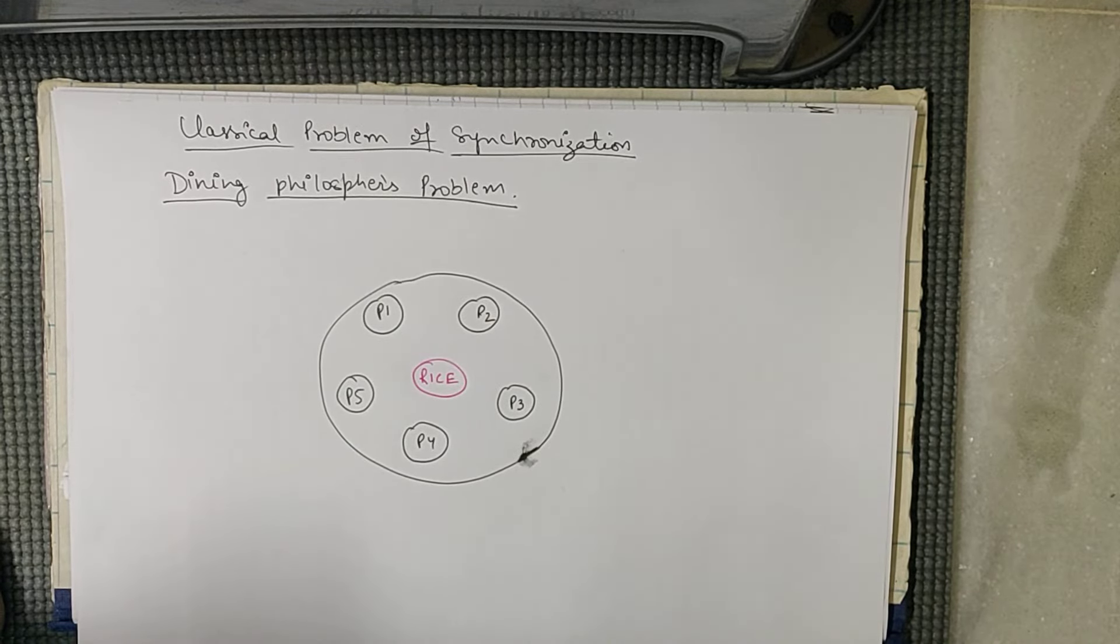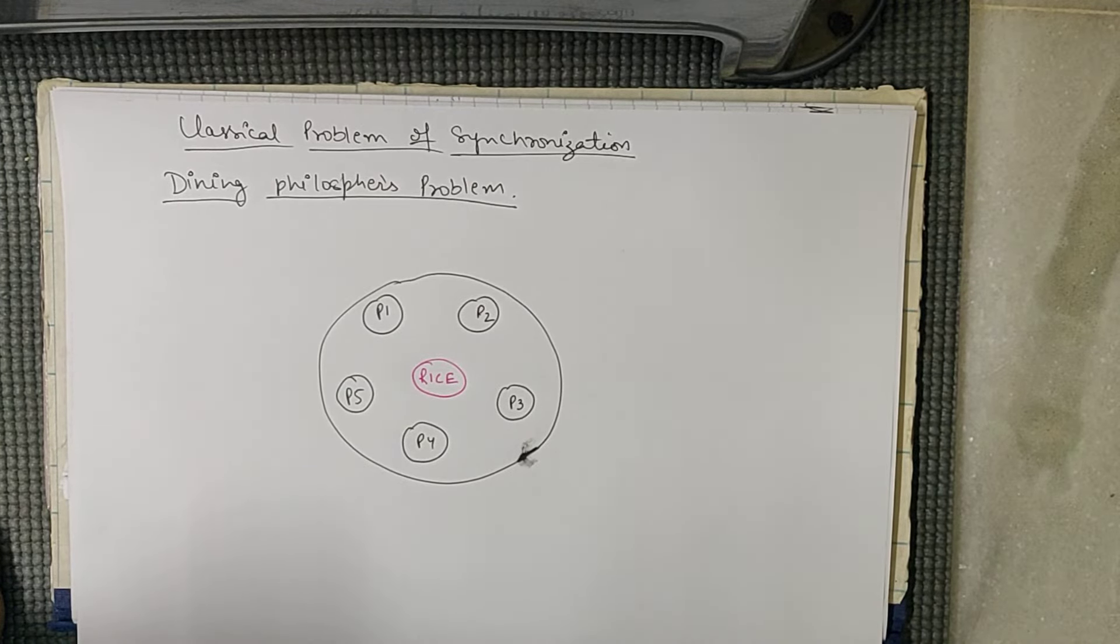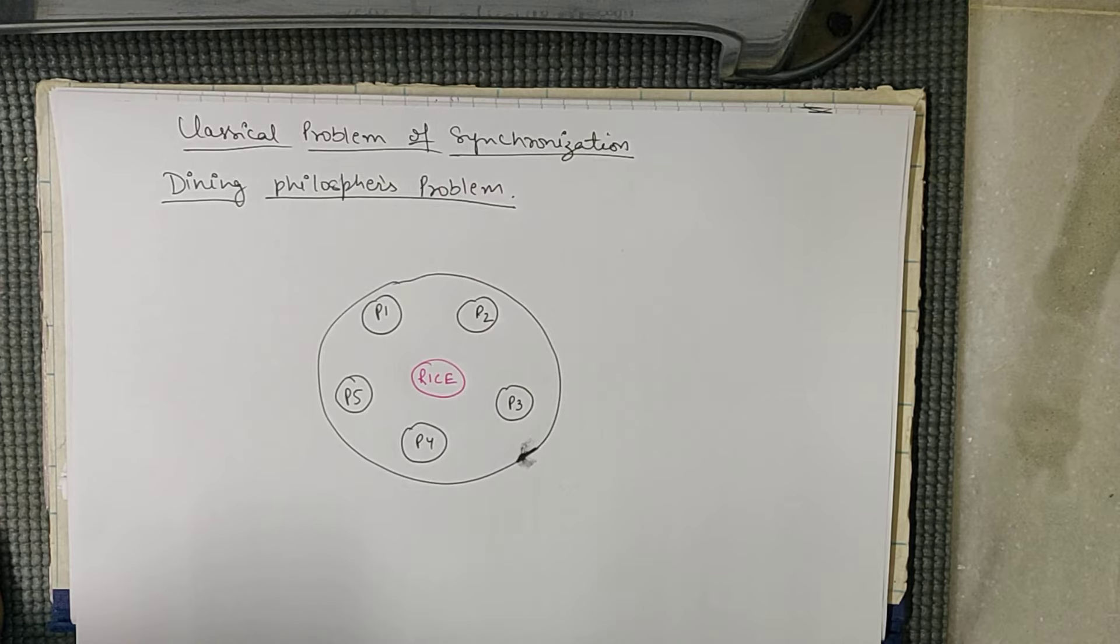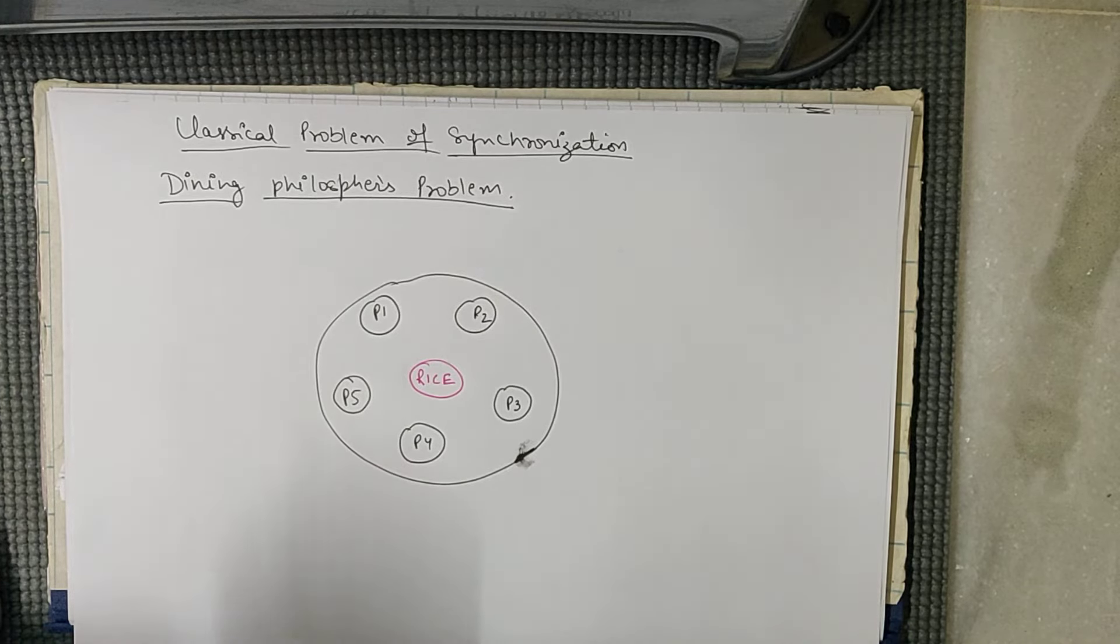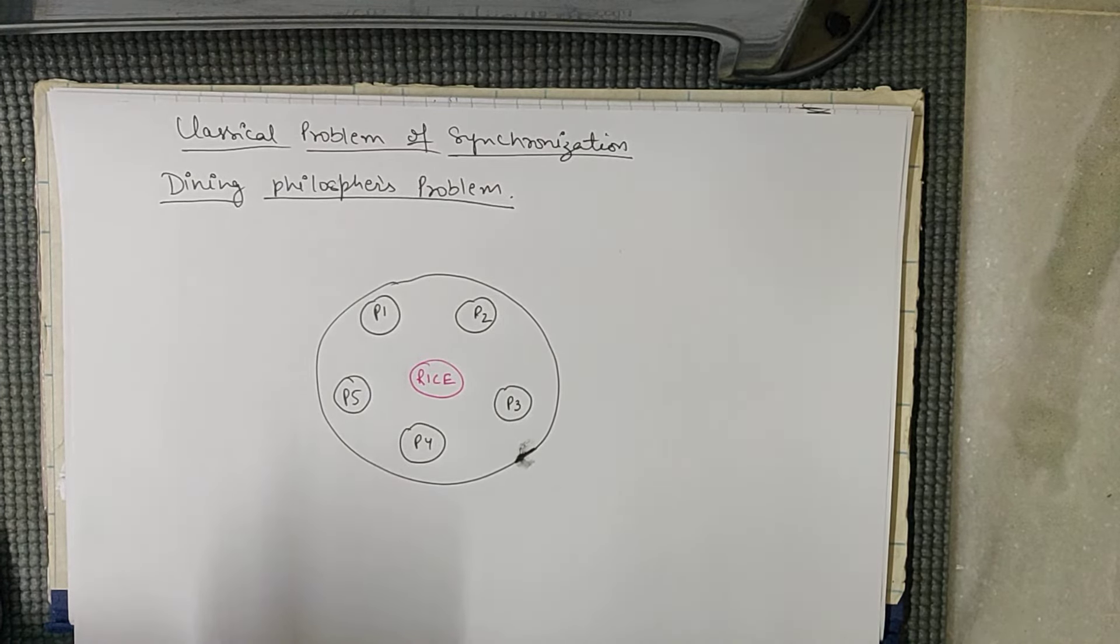Hello everyone, the next topic in operating system tutorial is the Dining Philosophers Problem. This is the third problem of classical problem of synchronization. So this is a round table dining table, there is a rice bowl in the center.